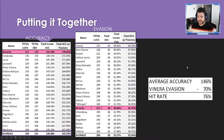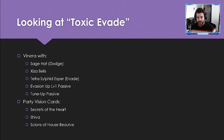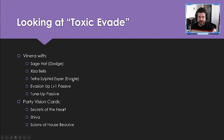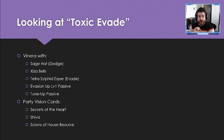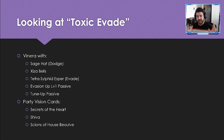Now let's look at an actual example — what my guild calls 'toxic evade,' essentially the whale version of an evasion comp. We'll build Venera with Sage's Hat dodge +5, Zisabels, Tetra Silphid with evade nodes unlocked, and evasion passives. For vision cards, an evade comp needs at minimum: Secrets of the Heart (boosts luck for the party) and Shiva (gives 20 evasion to party). A third card can boost agility for additional evasion.